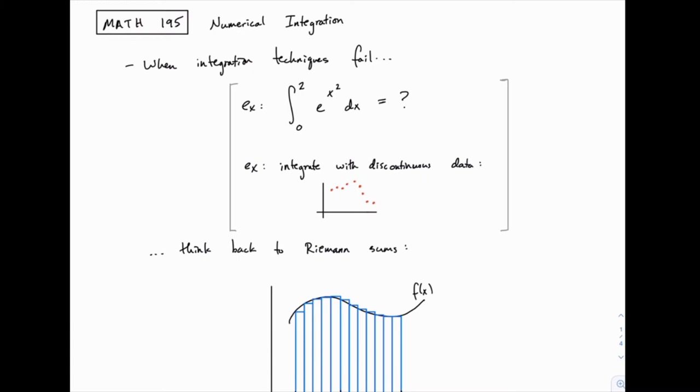There are also cases where we might just have data points, and I've got an example here with discontinuous data. For instance, the velocity of an object measured at discrete points in time, and we want to measure the total distance traveled. We could integrate if we had a velocity function, but if we don't, all we have is discrete points like this. We might still want to approximate this integral, but we can't integrate analytically.